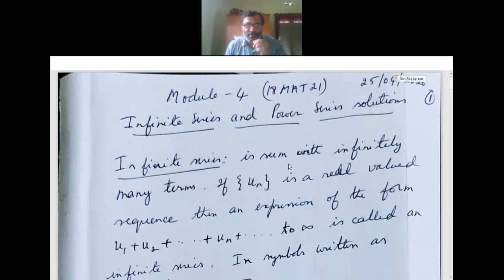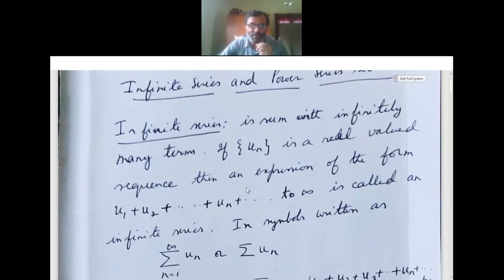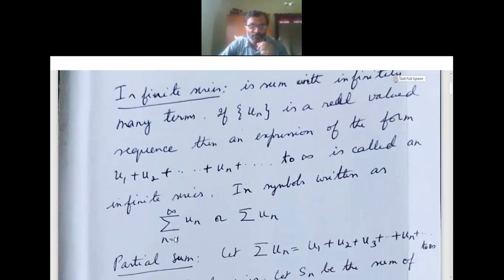So what is this infinite series? Infinite series is the sum with infinitely many terms. If un is a real-valued sequence, then an expression of the form u1 plus u2 plus u3 to infinity is called an infinite series. In symbols it is written as sigma n equals 1 to infinity un, or simply sigma un.